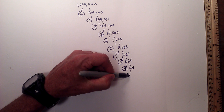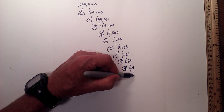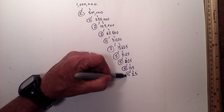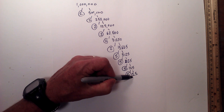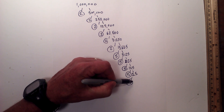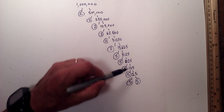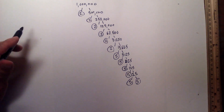5 times 25 equals 125 — circle the 5 because it is prime. And finally 5 times 5. We are now finished because we are down to only prime numbers.